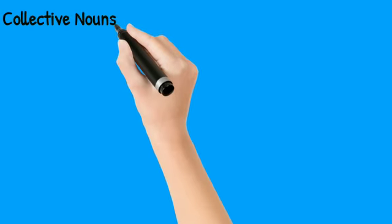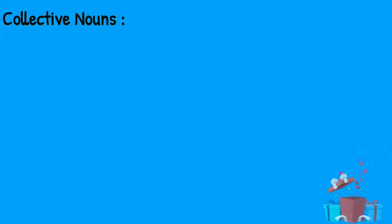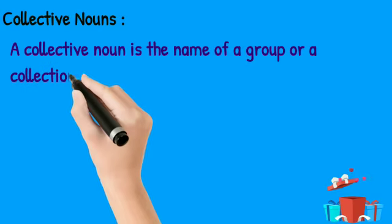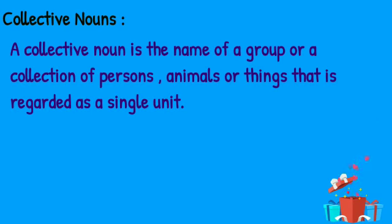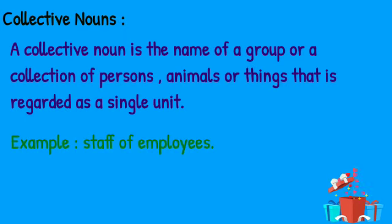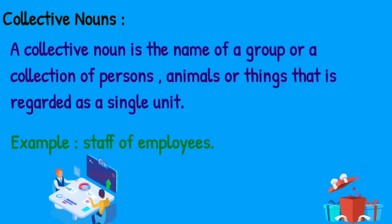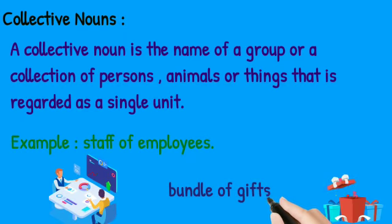Now let us discuss the collective nouns. A collective noun is the name of a group or a collection of persons, animals or things that is regarded as a single unit. You have already read about collective nouns such as a clump of trees, a flock of birds, a fleet of sheep. Let us see more examples: staff of employees and bundle of gifts.